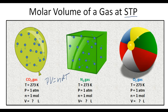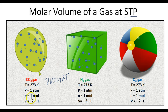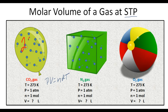One mole of gas at STP will always occupy 22.4 liters of space. Each one of these conditions meets standard temperature and pressure — we've got one atmosphere of pressure, a temperature of 273 K, and one mole of this gas. So how much space should this gas occupy in this balloon? According to the molar volume of a gas at STP, it should take up 22.4 liters.